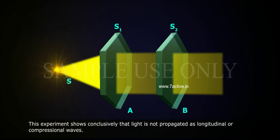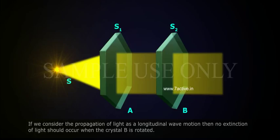This experiment shows conclusively that light is not propagated as longitudinal or compressional waves. If we consider the propagation of light as a longitudinal wave motion, then no extinction of light should occur when the crystal B is rotated.